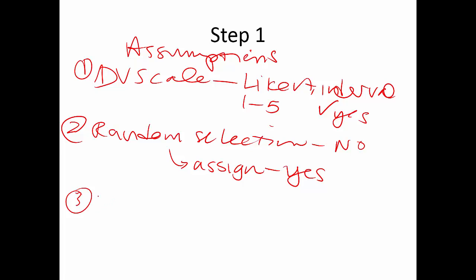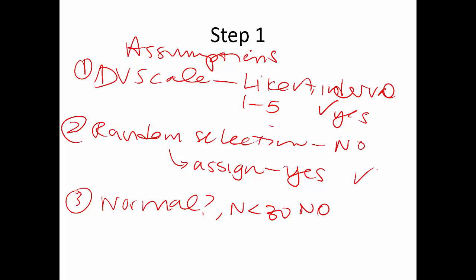The last assumption: is the population normal? We don't know, and N is definitely less than 30, so we can't assume normality either. So that's a no. We end up with two checks and an X.